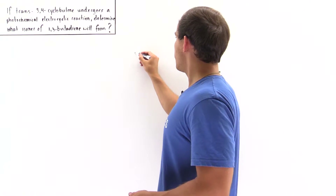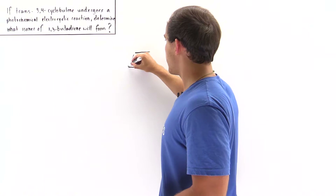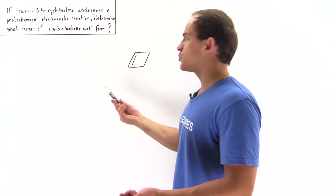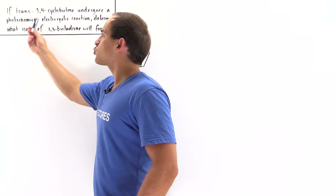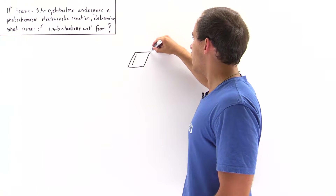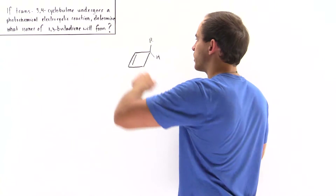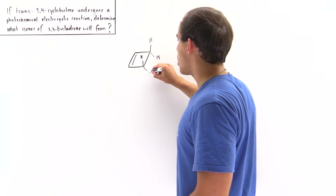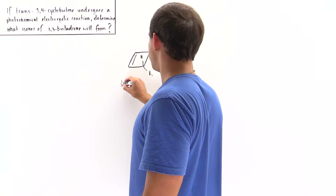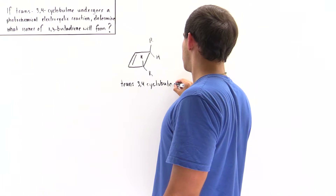The molecule has four bonds and a pi bond. We have some arbitrary R groups that are trans with respect to one another. The R on one carbon is pointing up, so the H on that carbon is pointing down. On the other carbon, because we're trans, the H is pointing up and the R is pointing down. This is trans-3,4-cyclobutene.